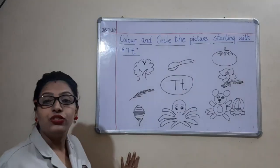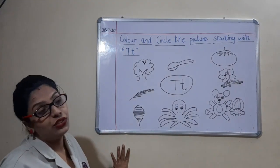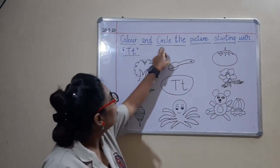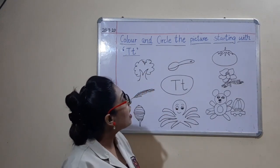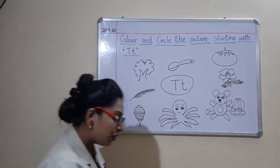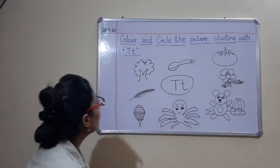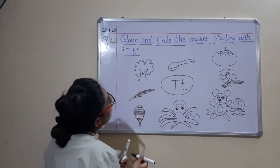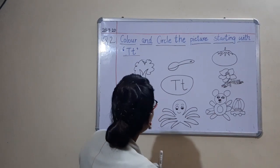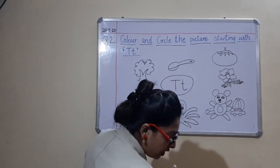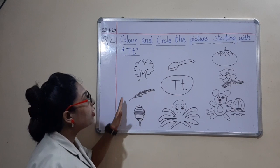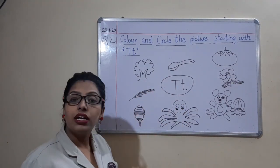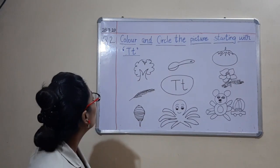Okay children, now we will do the second question. Our second question is: color and circle the picture starting with T. So you will look for T-related pictures. Whichever pictures or vocabulary start with letter T, you have to circle them and you have to color them.